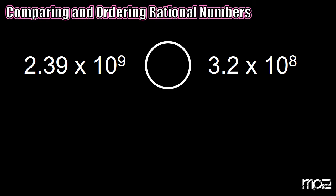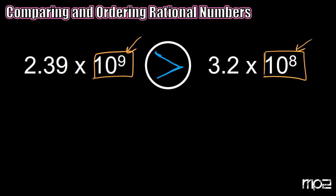In comparing scientific notation, the first step is to take a look at our powers of 10. We notice that we have two different exponents: 10 to the ninth and 10 to the eighth. Since 10 to the ninth is obviously bigger — it has one extra zero — we can say that 2 and 39 hundredths times 10 to the ninth power is greater because the exponent on the power of 10 is bigger.